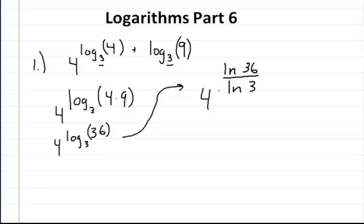And after you put that into your calculator you're going to find that the natural log of 36 divided by the natural log of 3, you're going to get 3.262. So 4^3.262, and that's what you would do that.